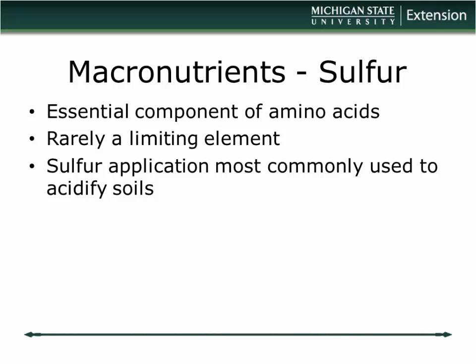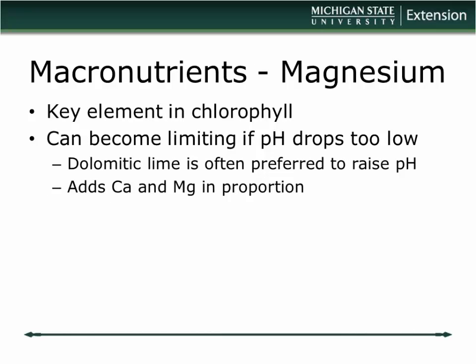In field soils we rarely have sulfur issues. When we're applying sulfur to plants, it's primarily as a means of acidifying the soil — especially with conifers where pH may be too high. Magnesium is one that can be limiting in certain cases. Right at the center of the chlorophyll molecule itself is a magnesium atom, so one of the things we see when plants are deficient in magnesium is they can't make enough chlorophyll and they become chlorotic.